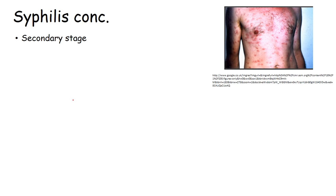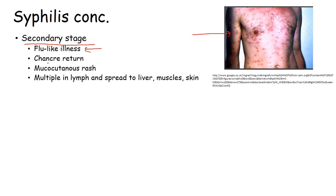There are different stages of syphilis. In the primary stage, the infection only begins in the genitals. In the secondary phase, you will see different types of symptoms throughout the body, like sores or patches growing throughout the body, flu-like illness, and itching. There is a mucocutaneous rash and spread to the liver, muscles, and skin, which is visible from outside.